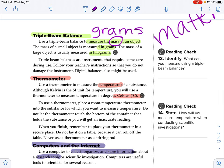Alright, thermometers. Use a thermometer to measure the temperature of a substance. Although Kelvin is the SI unit for temperature, you will use a thermometer to measure temperatures in degrees Celsius. So to use a thermometer, place a room temperature thermometer into the substance for which you want to measure the temperature. Do not let the thermometer touch the bottom of the container that holds the substance you are or you will get an inaccurate reading. When you finish, remember to place your thermometer in a secure place. Do not lay it on a table because it can roll off the table. Never use a thermometer as a stirring rod.